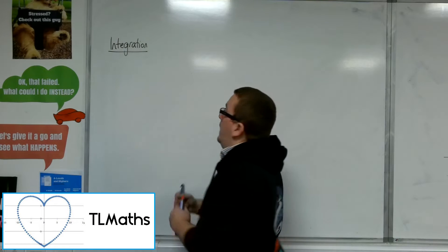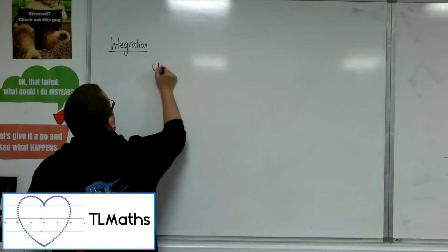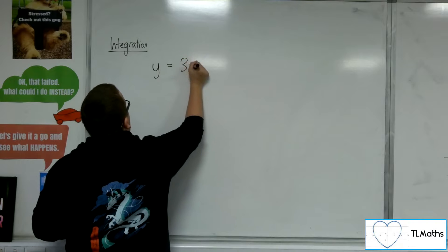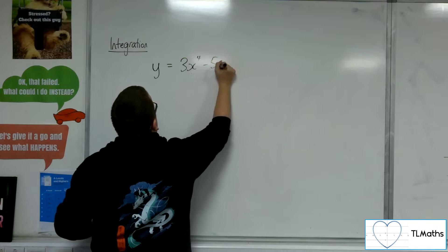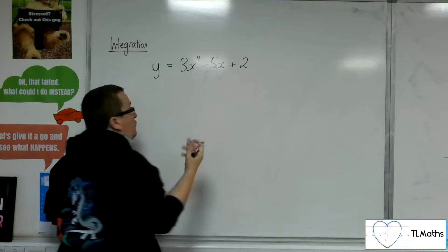OK, so we know that if I had y equals 3x to the 4 minus 5x plus 2, for example,